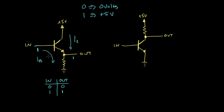At first glance, this doesn't seem terribly interesting — we put 5 volts in and get 5 volts out; we put 0 volts in and get 0 volts out. But we saw before that this output can drive a whole lot more current than the input might be able to. We might have a relatively low input current, but the output is able to drive more current.